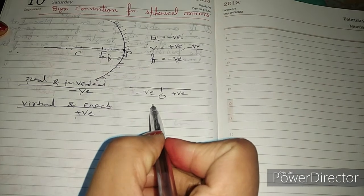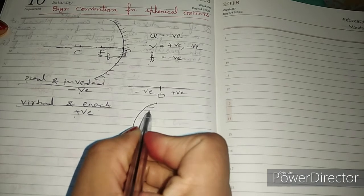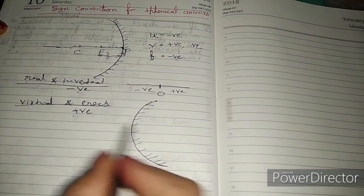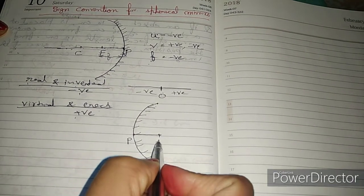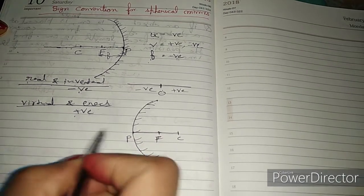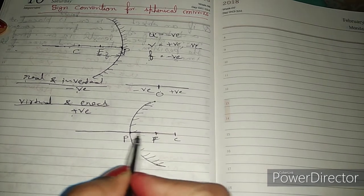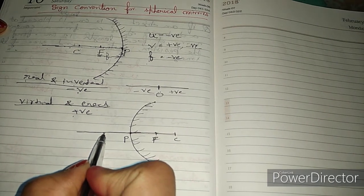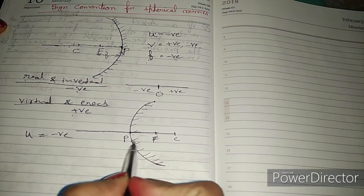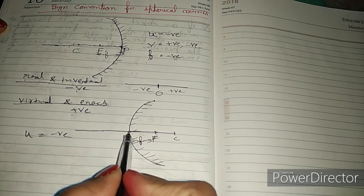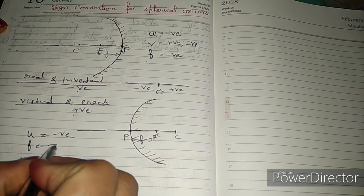Again if we take convex mirror, this type between point P, F and C and principal axis. So we have left side, so we have object distance negative. And focal length - what is behind the mirror? Right side, therefore what? Positive.